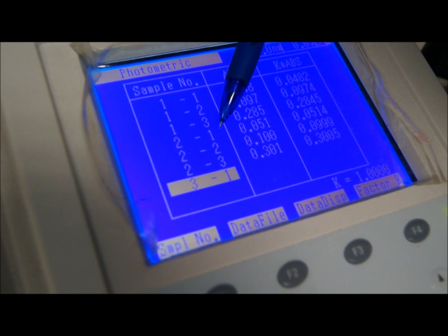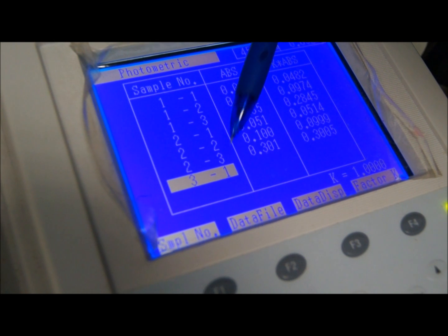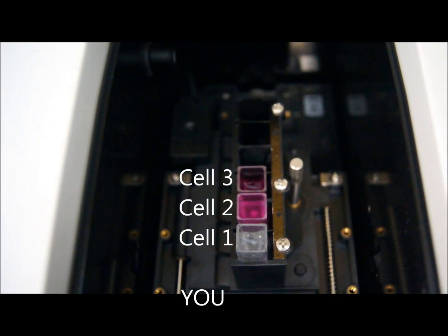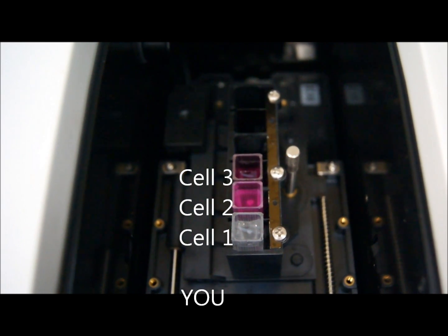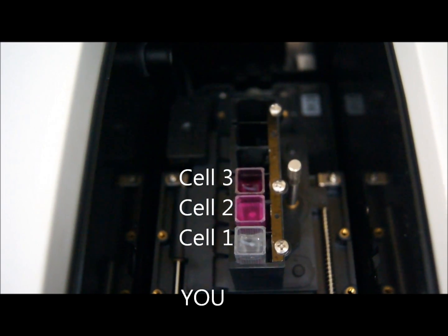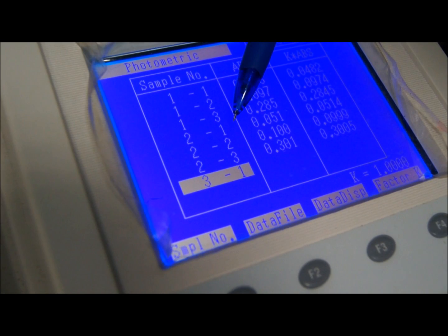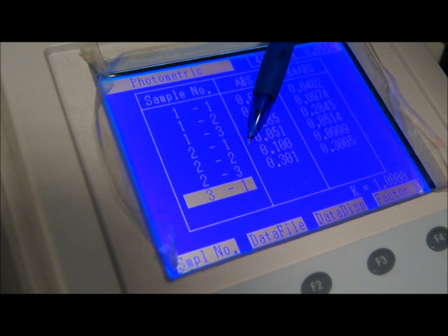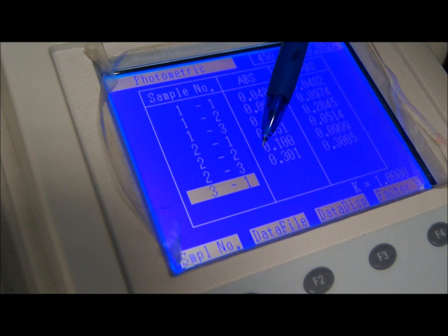And these are cuvettes 1, 2, 3 that we placed in order just now, with 1 being closest to us and 2 being further away and 3 being the furthest away from where we were.